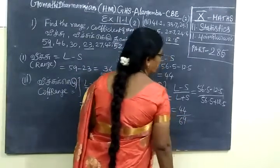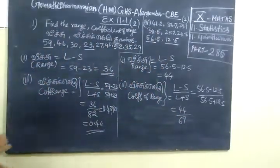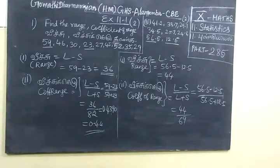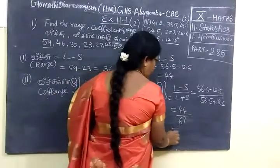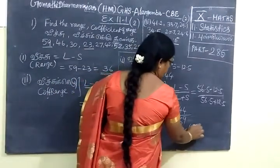So, 44 by 69 equals 0.6376. The coefficient is 0.6376.